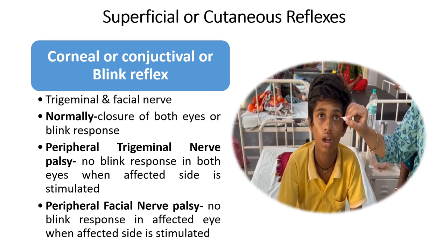Second is the corneal or conjunctival reflex, also known as the blink reflex. Nerve supply: trigeminal afferent and facial efferent. We have to touch the bulbar conjunctiva or the cornea with a cotton wick. It will lead to the closure of eyes. Normally, the person will have closure of both eyes. If the patient is having peripheral trigeminal nerve palsy, there will be no blink in both eyes when the affected eye is stimulated. In peripheral facial nerve palsy, there will be no blink in the affected eye when that side is stimulated.